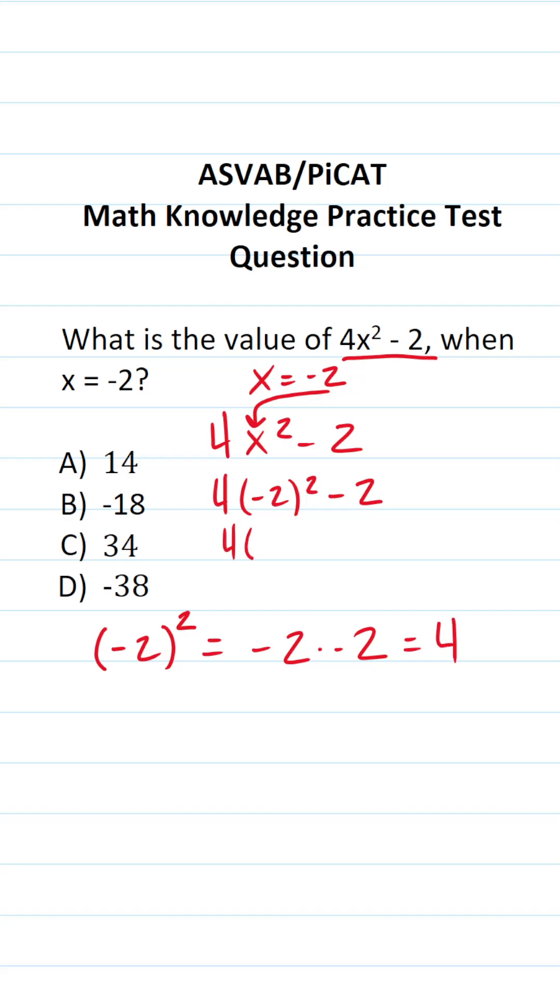This becomes 4 times 4 minus 2. This becomes 4 times 4 is 16 minus 2. 16 minus 2, of course, is 14. So when we evaluate this expression for x equaling negative 2, we can see that the answer is 14.